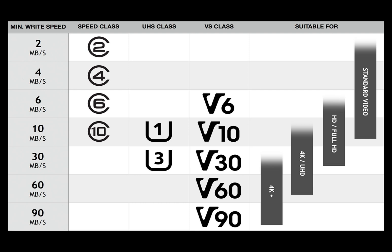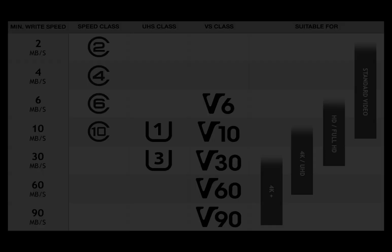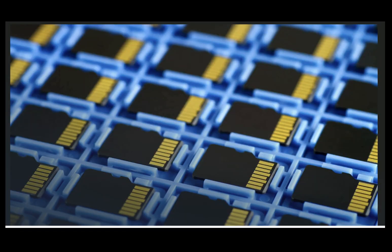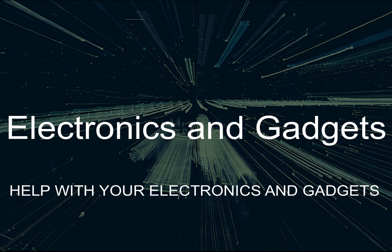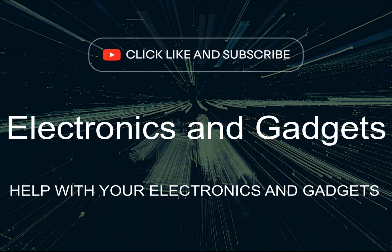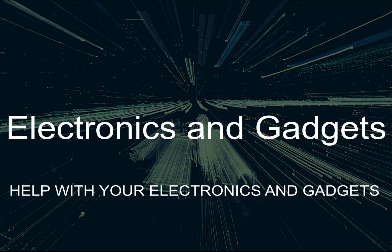My final thoughts: when you buy an SD card or micro SD card, it doesn't come down to which card is the best, but which card is the best for what you're going to do with it. Determine the purpose of your project, then go buy the card. Don't buy a super fast card if you don't need to utilize that speed, because you're going to pay for it. I hope you found this video helpful — please click like and subscribe to my channel, leave a comment below, and until next time, I'm out.